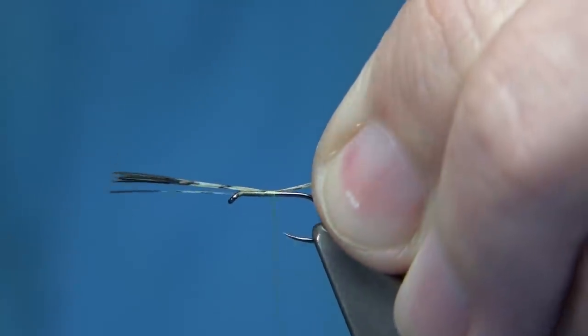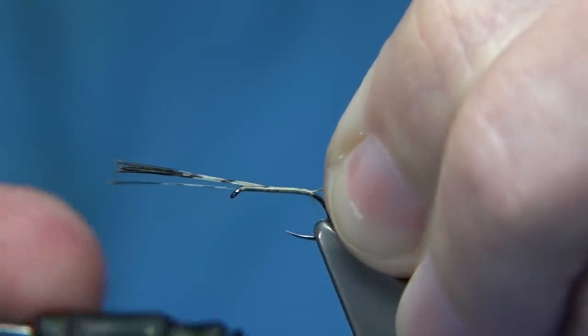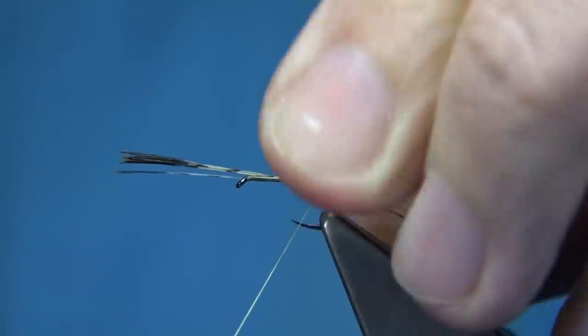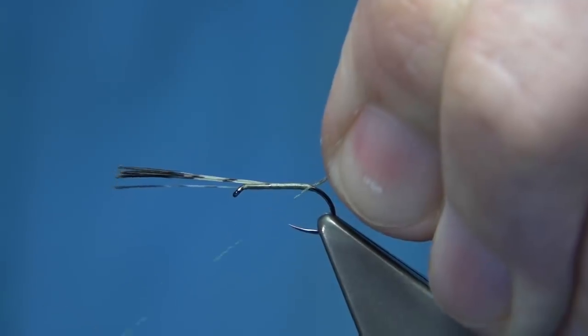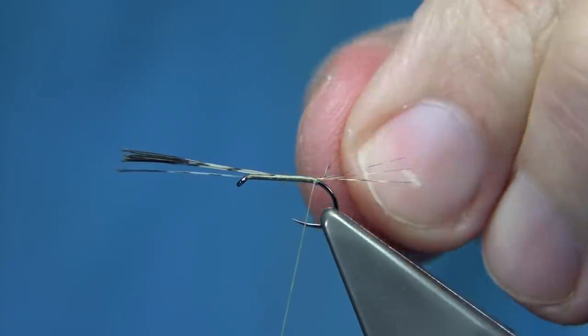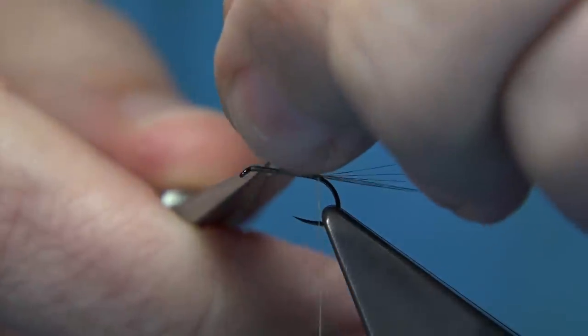Quite easy to tie it in. Get the thread down to the bend. You can come underneath the tail fibers, making sure they're sitting on top, then pull the thread towards the eye and lock it in with a turn. That usually helps to spread the fiber.